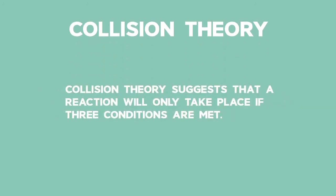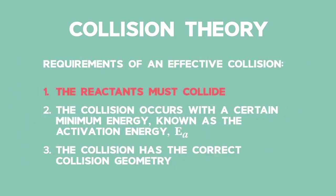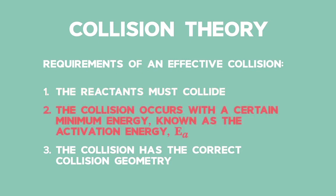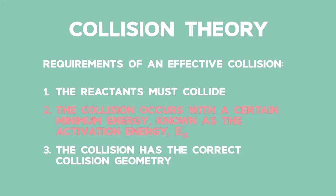Collision theory suggests that a reaction will only take place if three conditions are met. The three conditions are: 1. The reactants must collide. 2. The collision occurs with a certain minimum energy, known as the activation energy, or EA. 3. The collision has the correct collision geometry.